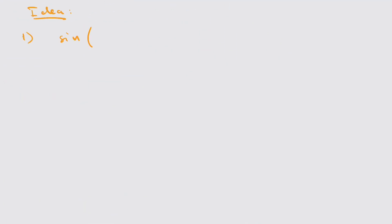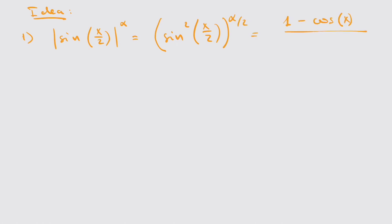The idea is as follows. First you can write the sine function to the power alpha by simply taking the square and then taking the power to alpha halves. After that you apply the cosine double angle formula to get this final expression.